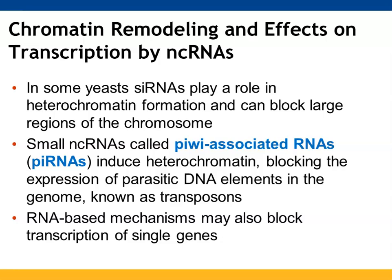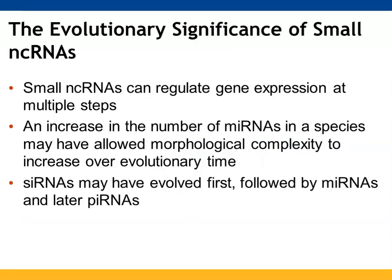Small ncRNAs known as piRNAs — piwi-associated RNAs — are able to produce more heterochromatin, which then cannot be transcribed. This prevents DNA elements known as transposons from producing their proteins. These non-coding RNAs can affect gene expression in multiple locations throughout replication, transcription, and translation. The number of miRNAs may have had an influence on the complexity of organisms over time — it's thought that siRNAs evolved first, then miRNAs, and then piRNAs.